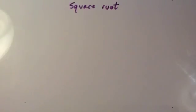We're now going to look at what a square root is and how to work out the square root of a number. A square root of a number is a value that can be multiplied by itself to give that original number.